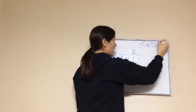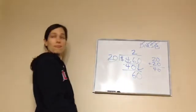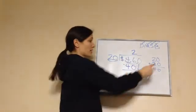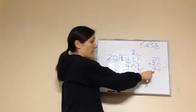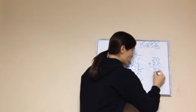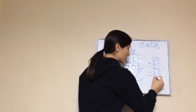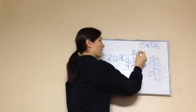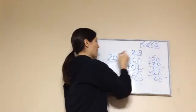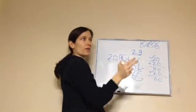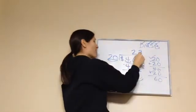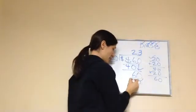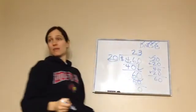Now subtract: we get 6, and bring down the 0 to make 60. That's our new number. Now 20 goes into 60 — we're up to 40 using two of them, try another 20: that gives us 60. Perfect. How many 20s? 3. So we divide, then multiply: 3 times 20 equals 60. Now subtract and bring down — nothing else — and it comes out even, no remainder.